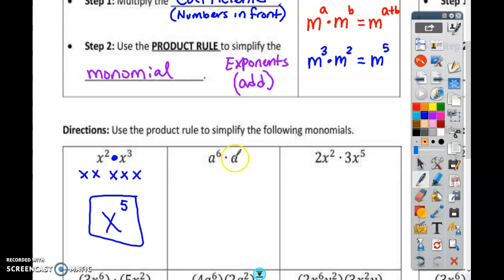What about right here? What is the exponent here if there's nothing? What's the number right here? 1. So if there's no number, it's a 1. If there's no number, it's a 1. So how many a's do I have in total? 7. So a to the seventh power.